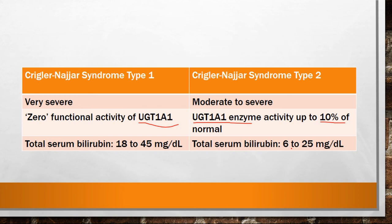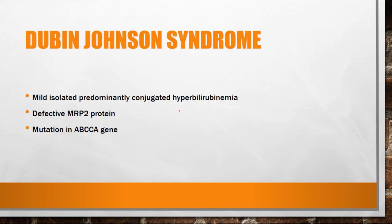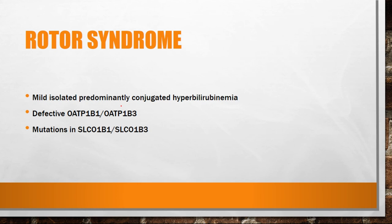Dubin-Johnson syndrome is a mild isolated predominantly conjugated hyperbilirubinemia. Conjugated bilirubin is elevated because, although all enzymes responsible for conjugating bilirubin are normal, there is a defect in the MRP2 protein responsible for passing conjugated bilirubin from hepatocytes into the bile canaliculus. This is due to a mutation in the ABCC2 gene. Rotor syndrome is also conjugated hyperbilirubinemia, with a defect in OATP1B1 or OATP1B3, due to mutations in the SLCO1B1 and SLCO1B3 genes.